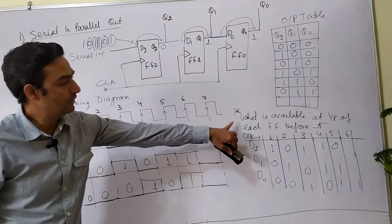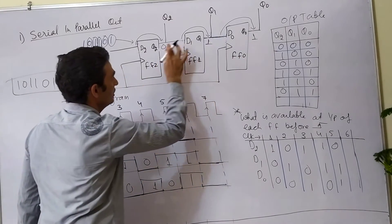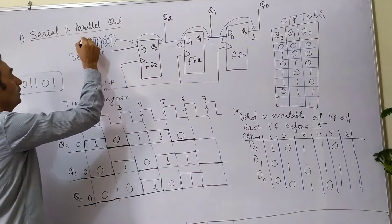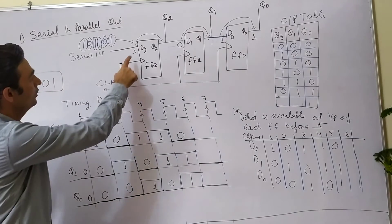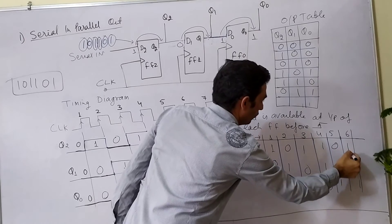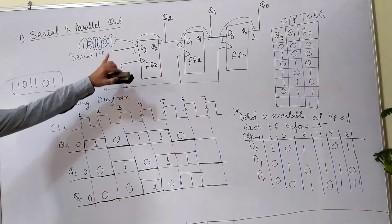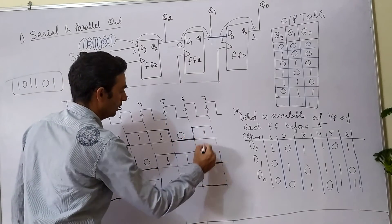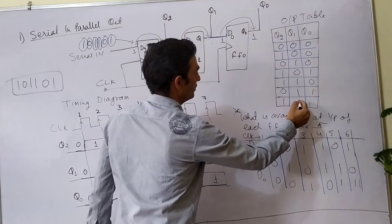What is available at the input of each flip-flop before the sixth clock edge? The values propagate: D2=1, D1=0, D0=1. After the sixth clock edge, the output will be Q2=1, Q1=0, Q0=1. So the input data is now completely inserted into this network.